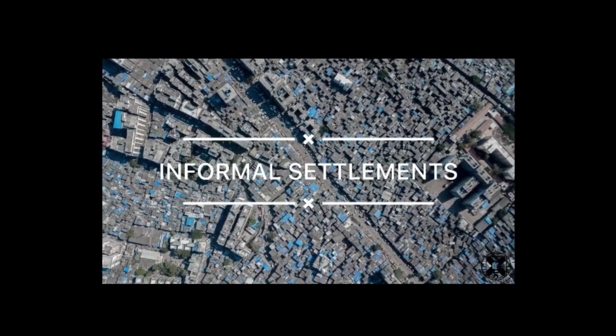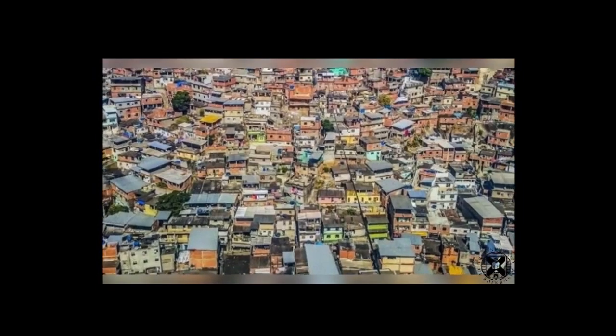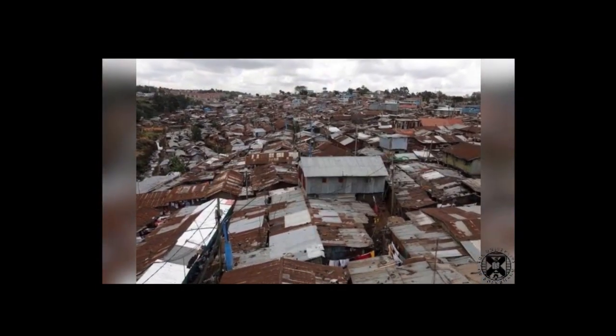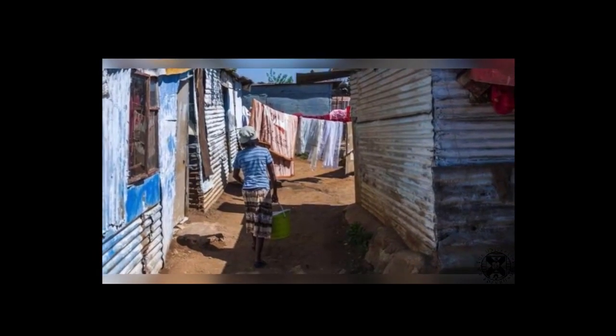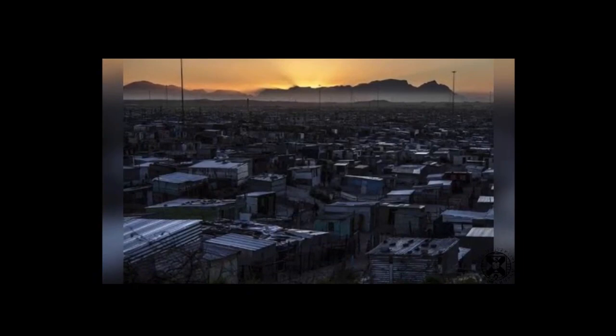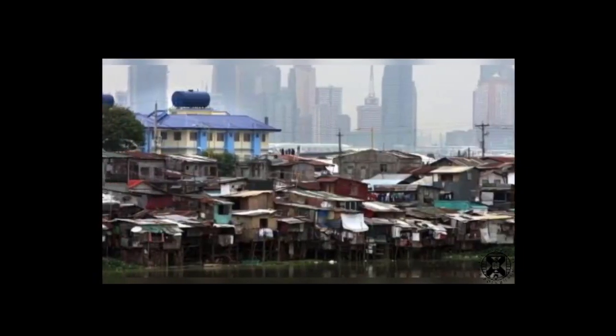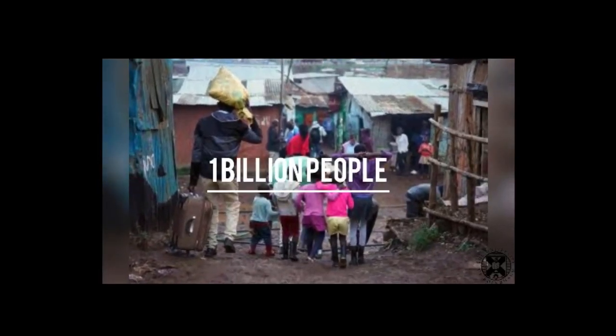Informal settlements will start to appear. You may also call these shanties or favelas depending on where in the world you are. These settlements are built organically by the people and they mainly use cheap and non-robust materials for construction, like steel sheets. Statistically speaking, in today's world, more than 30 percent of urban population are living in informal settlements. That's around 1 billion people.